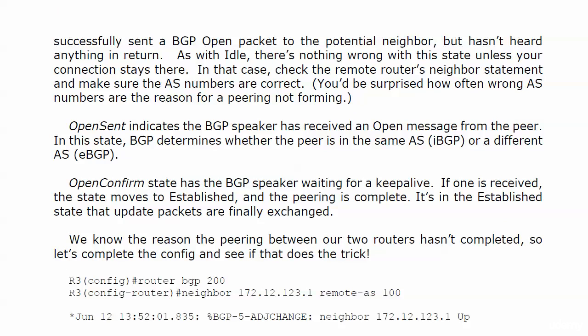There's nothing wrong with seeing 'active' for a few seconds, but when the connection stays there, you've got a problem. First, make sure BGP is configured on that neighbor. Check the remote router's neighbor statement and make sure the AS numbers are correct. With EIGRP you're used to the AS having to be the same, so sometimes when starting with BGP you'll accidentally enter the same AS as the remote router even when you shouldn't — it's a hard habit to break.